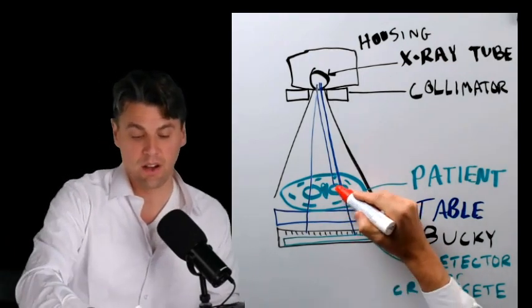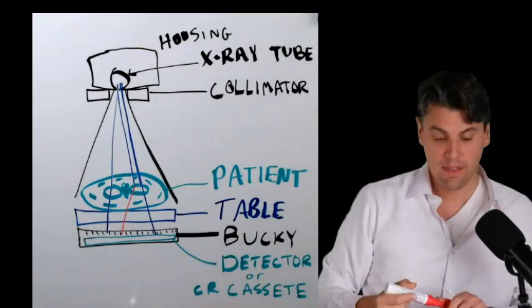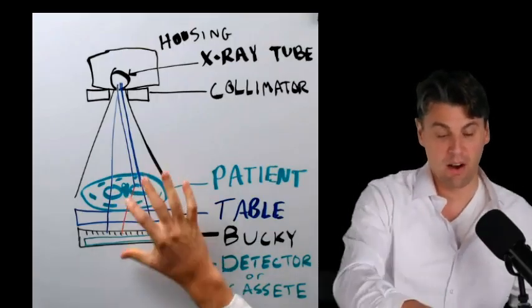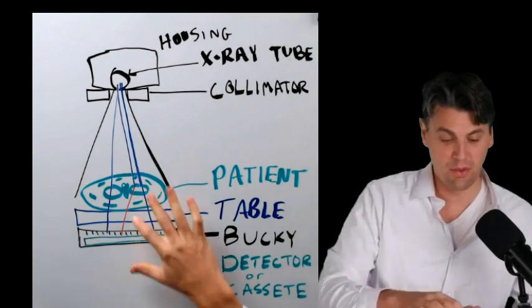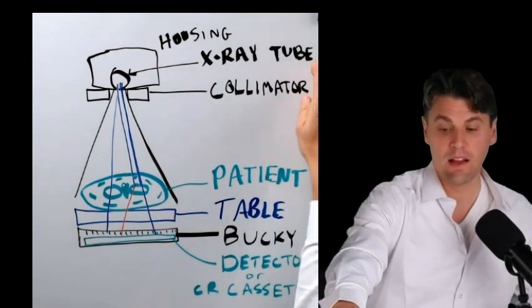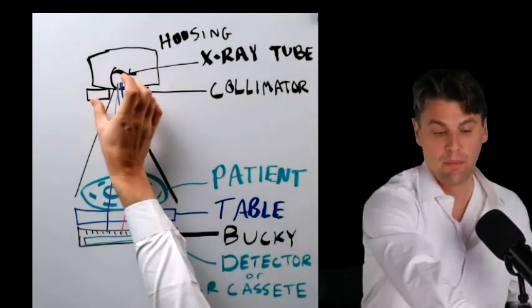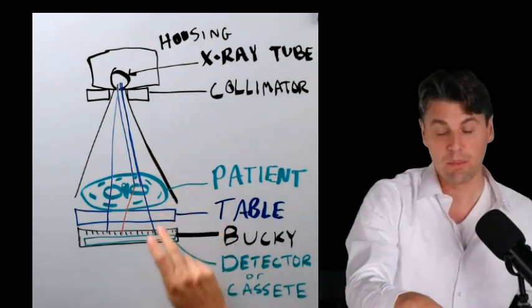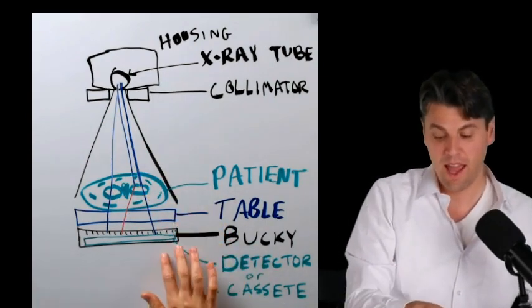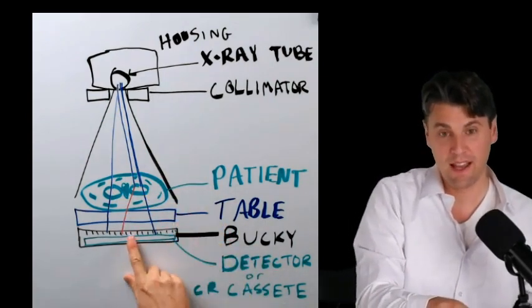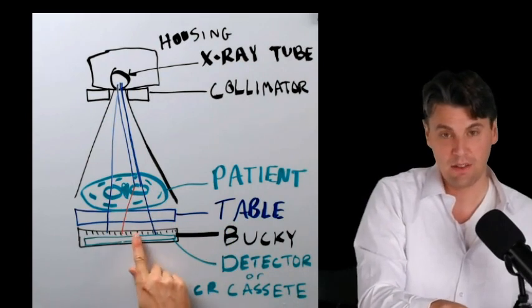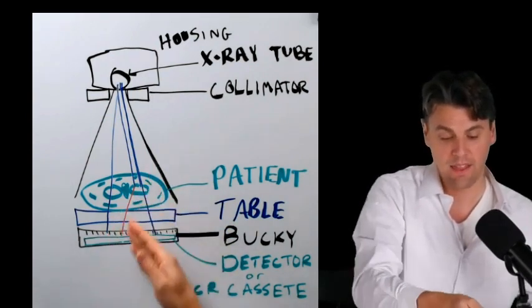Sometimes there's x-rays that are going to get scattered in the patient. That's going to lead to a background haze in our image due to scatter. But at a high level we go from x-ray tube, pass through the collimator, through the patient, through the table, and then we have what we call an anti-scatter grid here which is little septa to try and block that scatter.